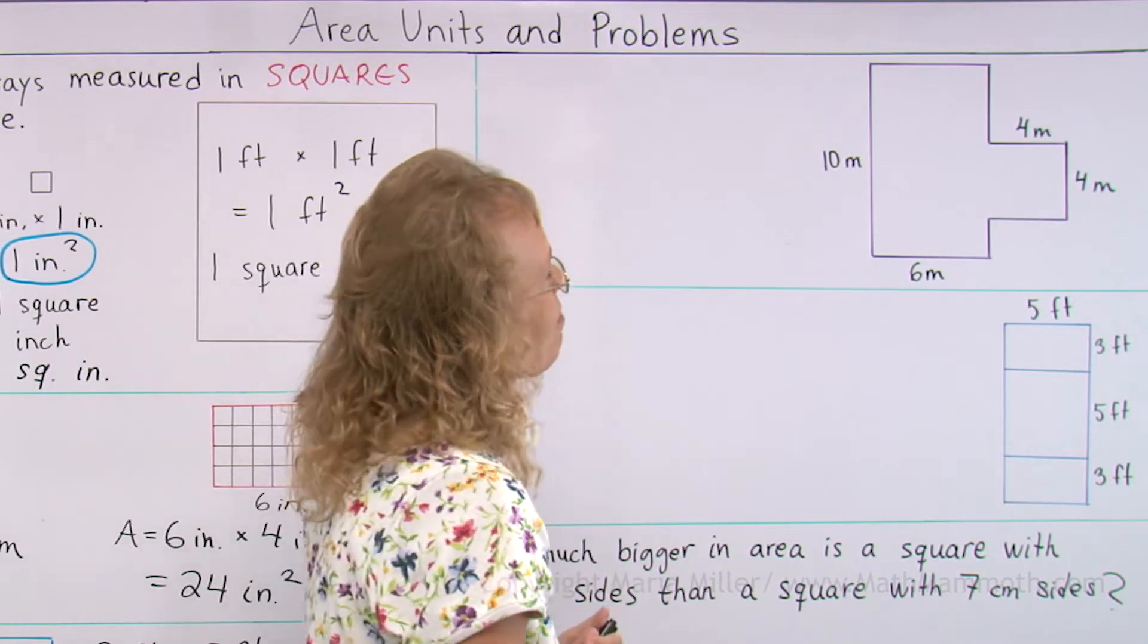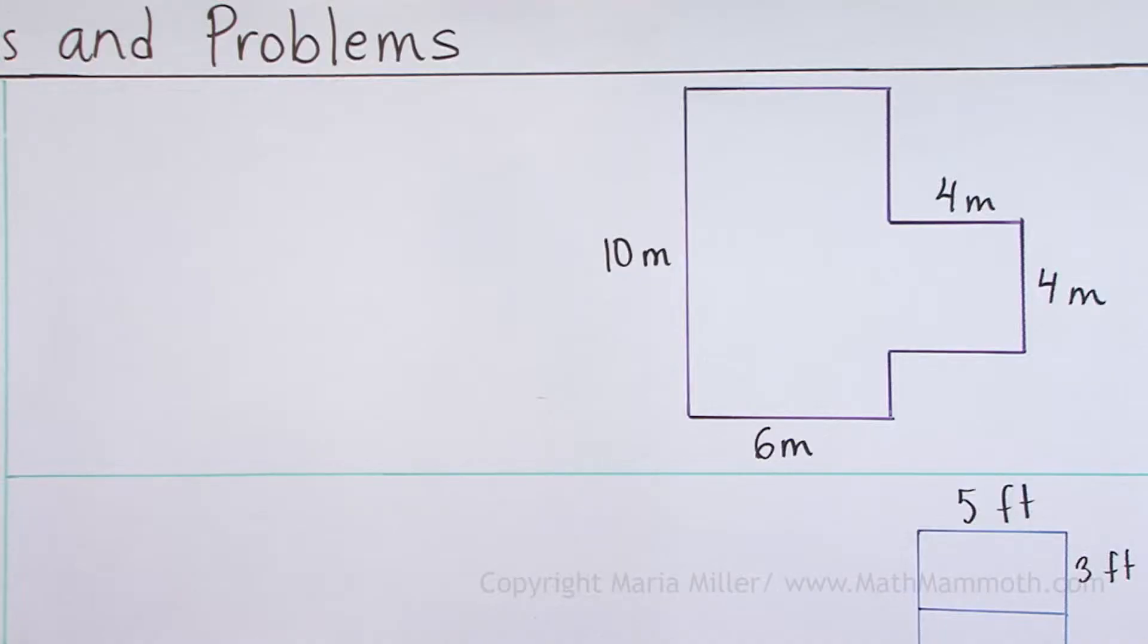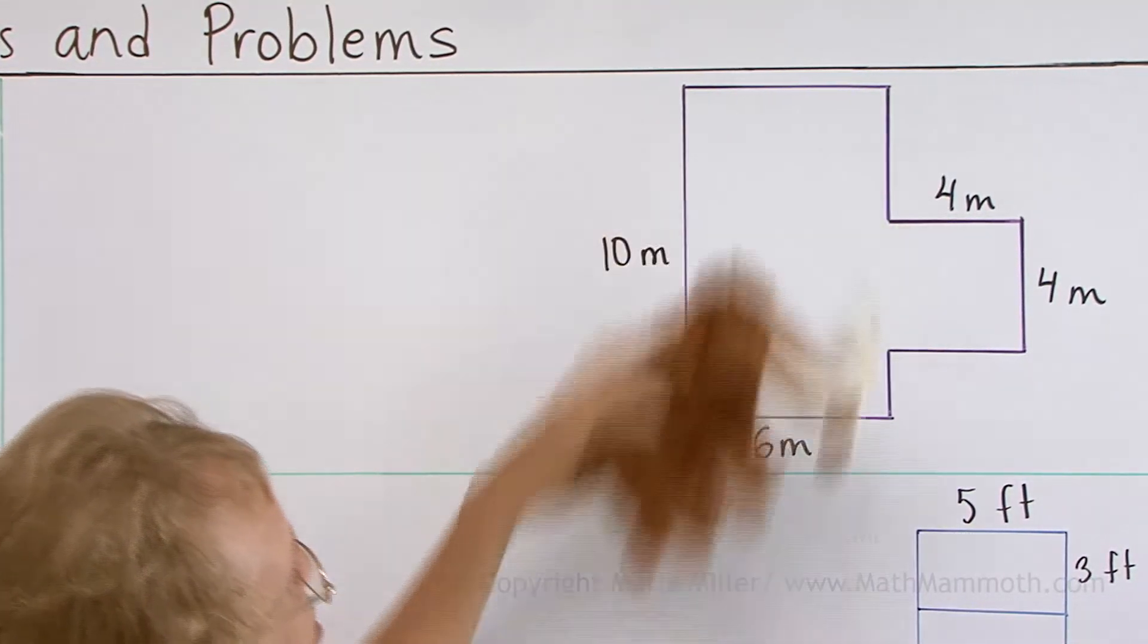Now, here is a shape. It could be, for example, a plan for a room. Yeah, you see, Matthew could comfortably live in that room, huh?